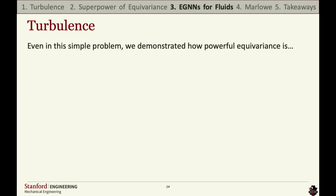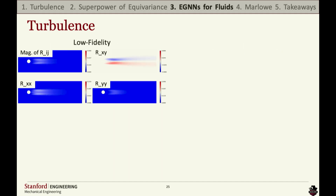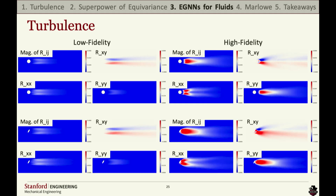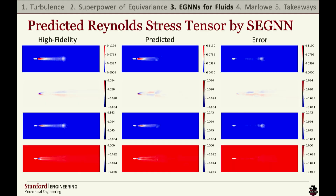Now we pivot to turbulence. As a refresher, we're trying to predict the Reynolds stress tensor by feeding a low-fidelity simulation into our model. Here's how a Reynolds stress tensor looks for a low-fidelity simulation versus its high-fidelity counterpart — you can see large differences in magnitude as well as structure. We train on a circle as well as a handful of ellipses, where each size is seen once or twice at different angles, and then test on all the unseen ones. Here is one of the testing cases showing how well SEGNET performs.